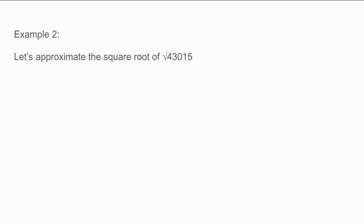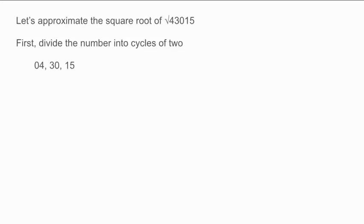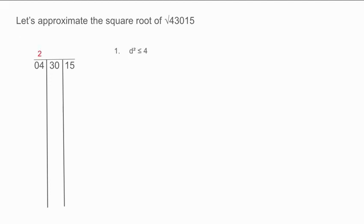Let's look at another example. We will now find the approximate square root of 43,015. First, divide the number into cycles of 2. Thus, we have 4, 30, and 15. Divide the cycles into columns. We will be obtaining part of our answer in the space above the columns. Begin from the left. To obtain the first digit, we must find the largest digit whose square is less than or equal to 4. The digit we are looking for is 2. Place it above the 4. This is the first digit of the integer part of our answer. Square 2 and subtract it from 4, obtaining 0. Place the 0 in the column below the 4. Place the 2 which we obtained earlier at the bottom of the column. Double the 2 and move it one space to the right.